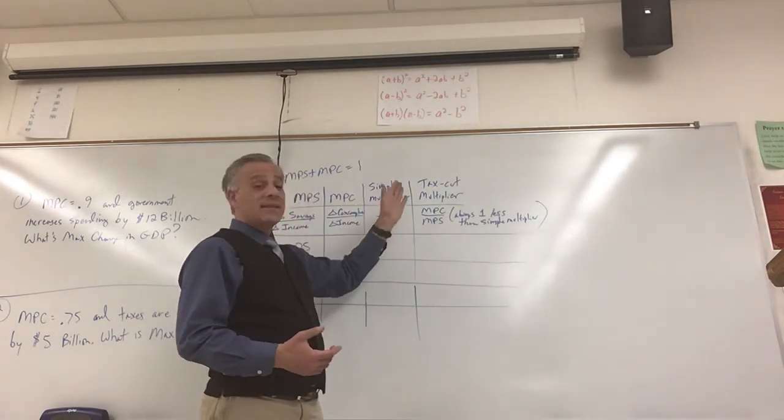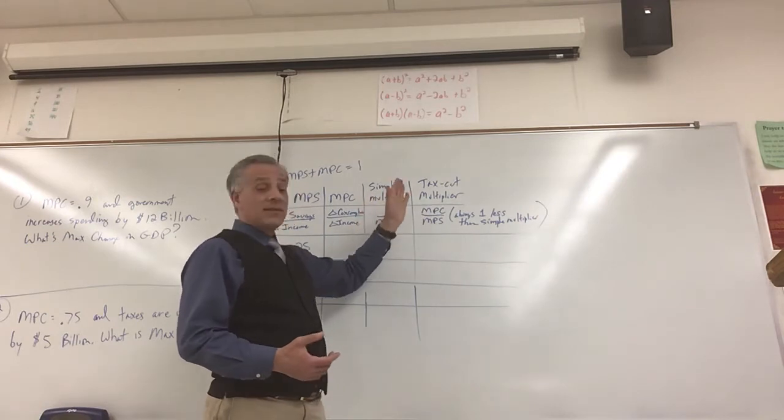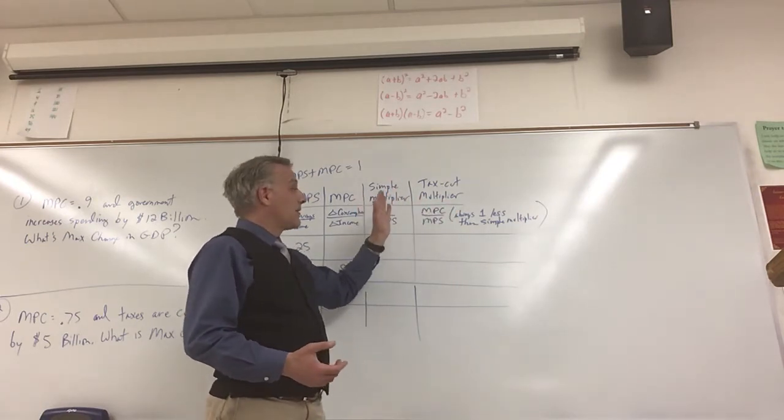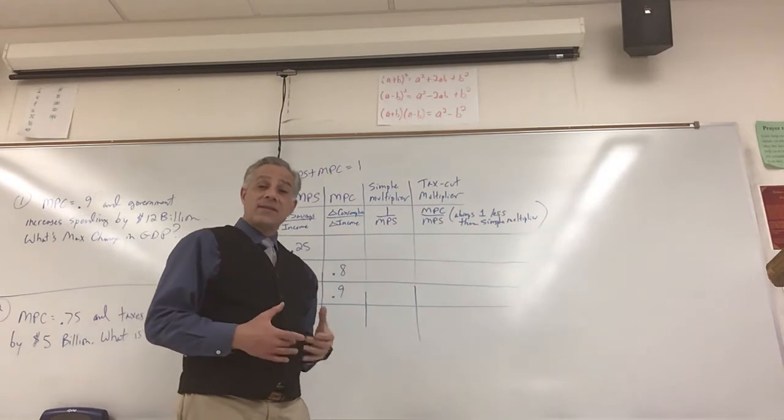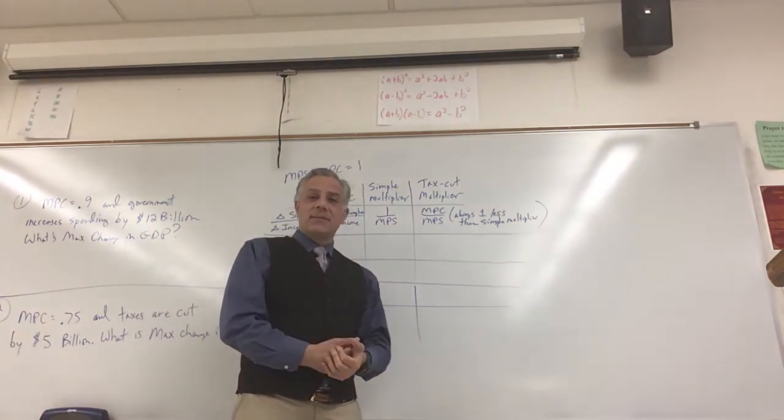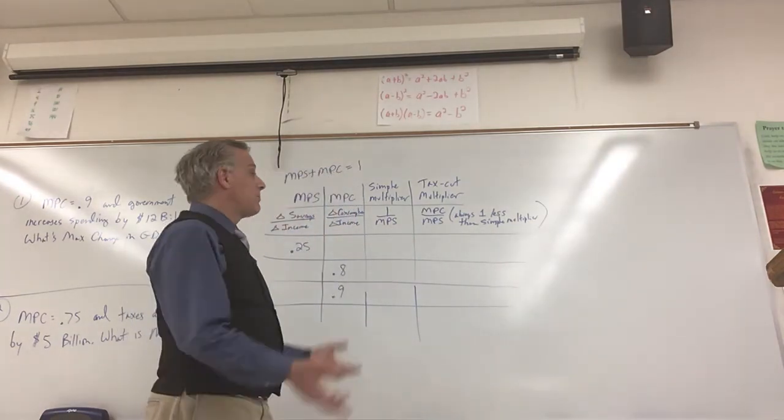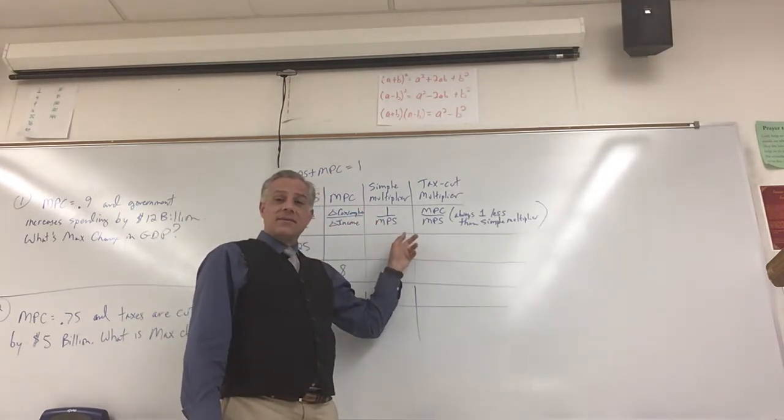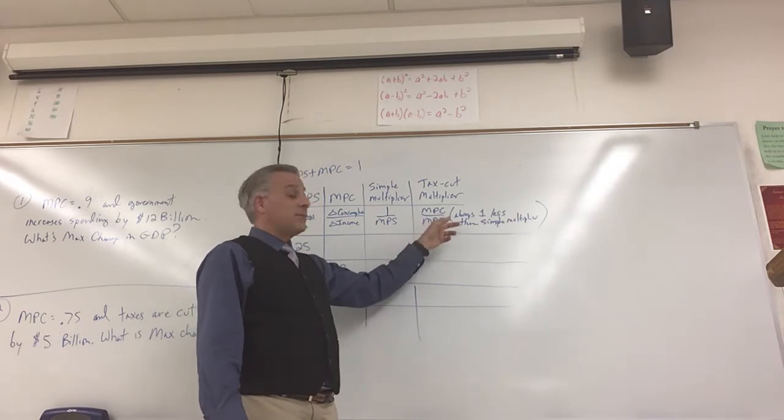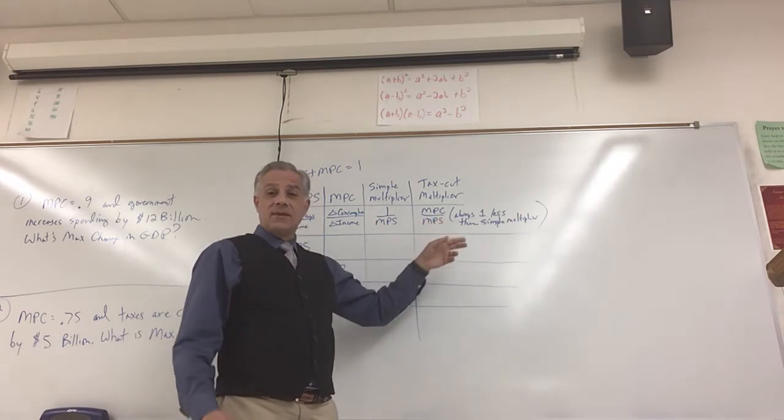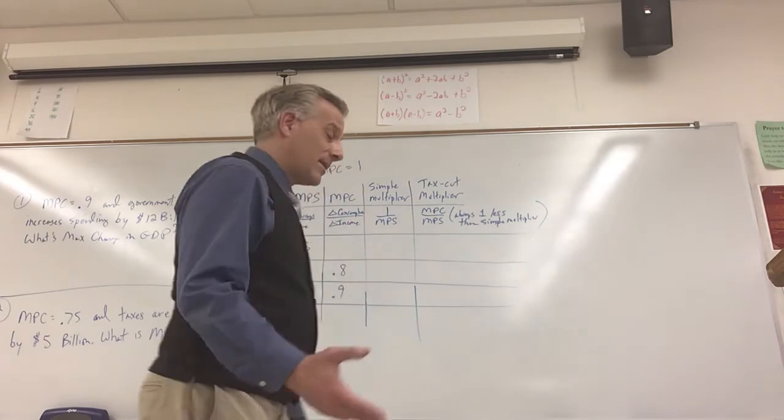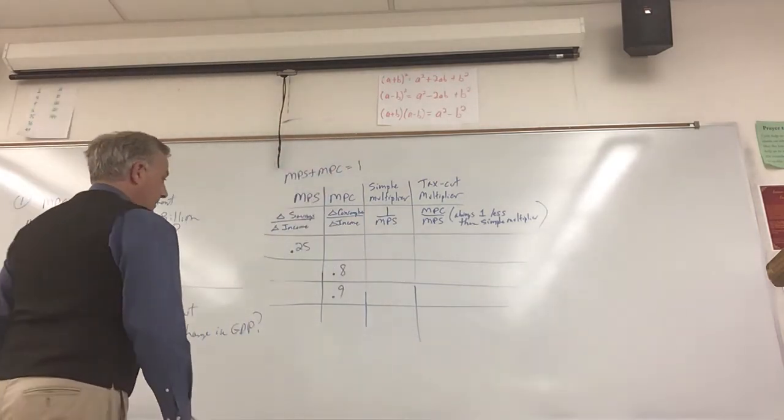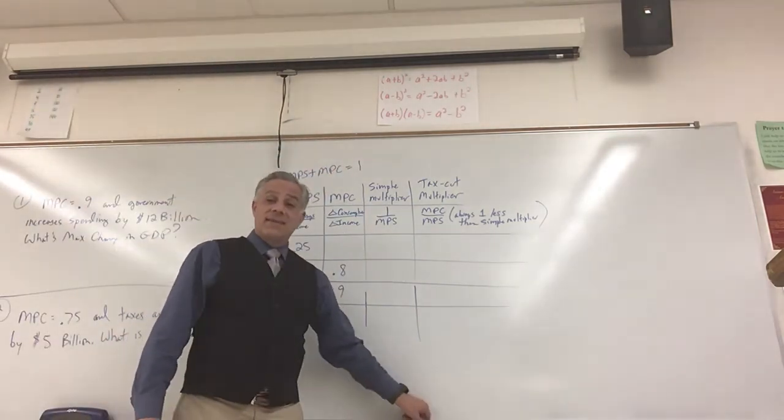And it's handy to know that this is always going to be exactly one less than the simple multiplier. So if this is 10, this is 9. If this is 5, this is 4. If this is 4, this is 3. Notice I used those combinations because they're the only three combinations that we'll have. But if you want to, you could plug in, if this is 8.7134, then this would be 7.7134. If you want to do that for kicks, but I bet you don't have much free time this time of year.